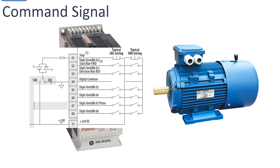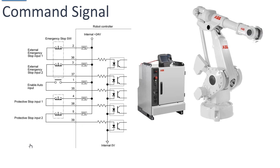Digital input terminals five, six, seven, and eight can be programmed to be whatever you want. The PLC would send signals — close contacts — feeding 24 volts DC to these terminals to control the drive.